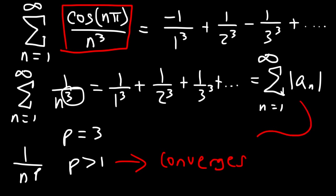So if the absolute value of the series converges, then by the absolute convergence theorem, the original series must also converge. Therefore, we can say that the original series is absolutely convergent.